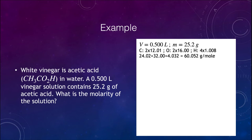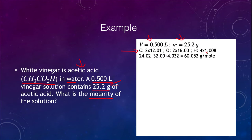In our next example, we are looking at vinegar, which is acetic acid CH3CO2H in water. We have a 0.5 liter vinegar solution containing 25.2 grams of acetic acid, and we want to find the molarity. To find molarity, we need moles, so we must convert grams. Acetic acid has two carbon atoms, two oxygen atoms, and four hydrogen atoms. Using their atomic masses, the molar mass of acetic acid is 60.052 grams per mole.